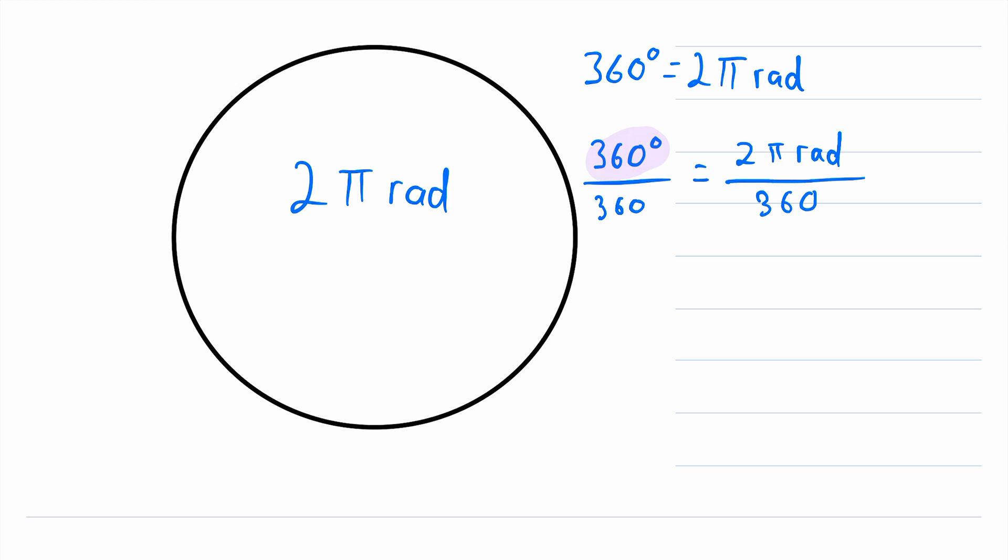Then over here on the left, 360 degrees divided by 360, that's just one degree, that's equal to two pi radians over 360. Two over 360 is equal to one over 180. So one degree is equal to one over 180 pi radians.